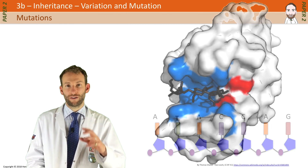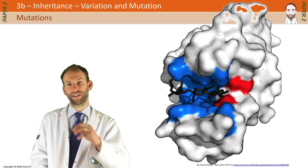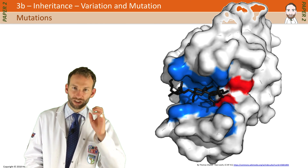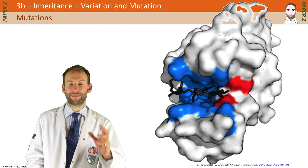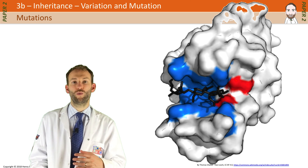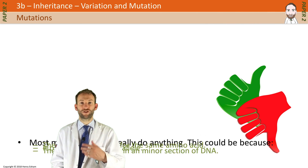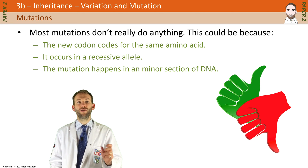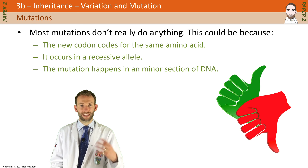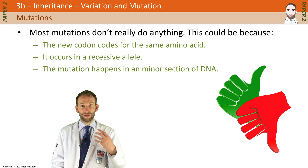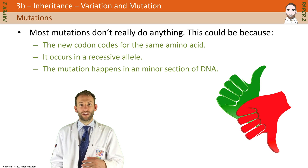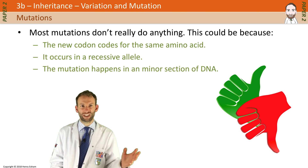A changed protein structure could lead to a problem with the shape of the protein and it may not work anymore. Remember, enzymes are proteins with very specific shapes caused by their amino acid sequence, and that active site has to fit the substrate. So if a mutation changes the shape of the active site, that enzyme wouldn't work. Most mutations don't do anything — this could be because the new codon still codes for the same amino acid (there are 64 codons but only 20 amino acids), or the mutation occurs in a recessive allele so it gets masked by the dominant allele, or the mutation happens in a minor section of DNA that doesn't code for anything important.